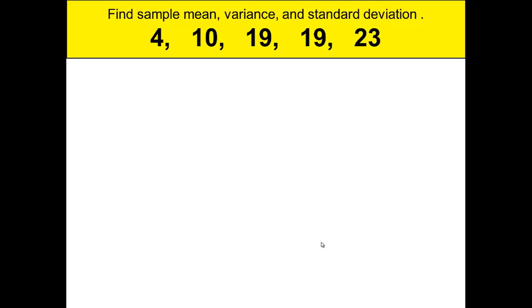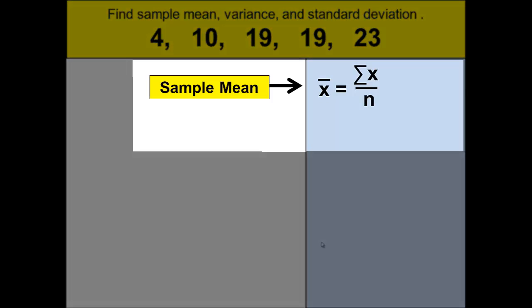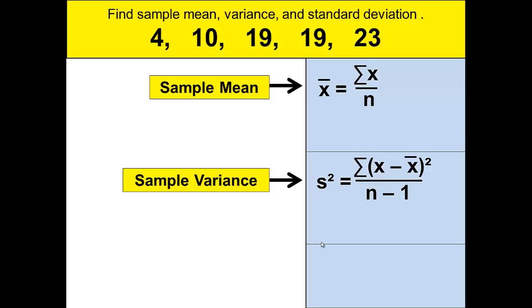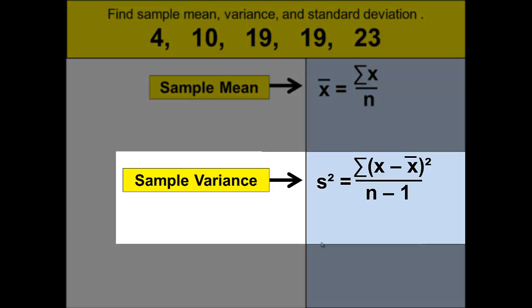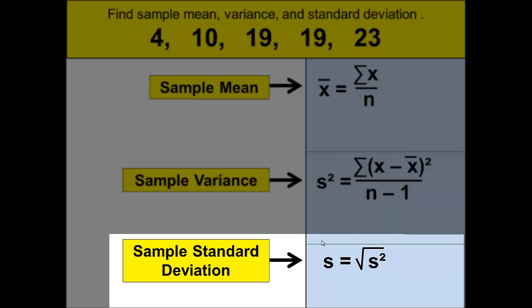Remember that the formula for sample mean is x̄ equals the sum of the x's divided by n. The sample variance is denoted by s² and s² equals the sum of (x - x̄)² divided by n - 1. And the sample standard deviation is s equals the square root of s², the sample variance.